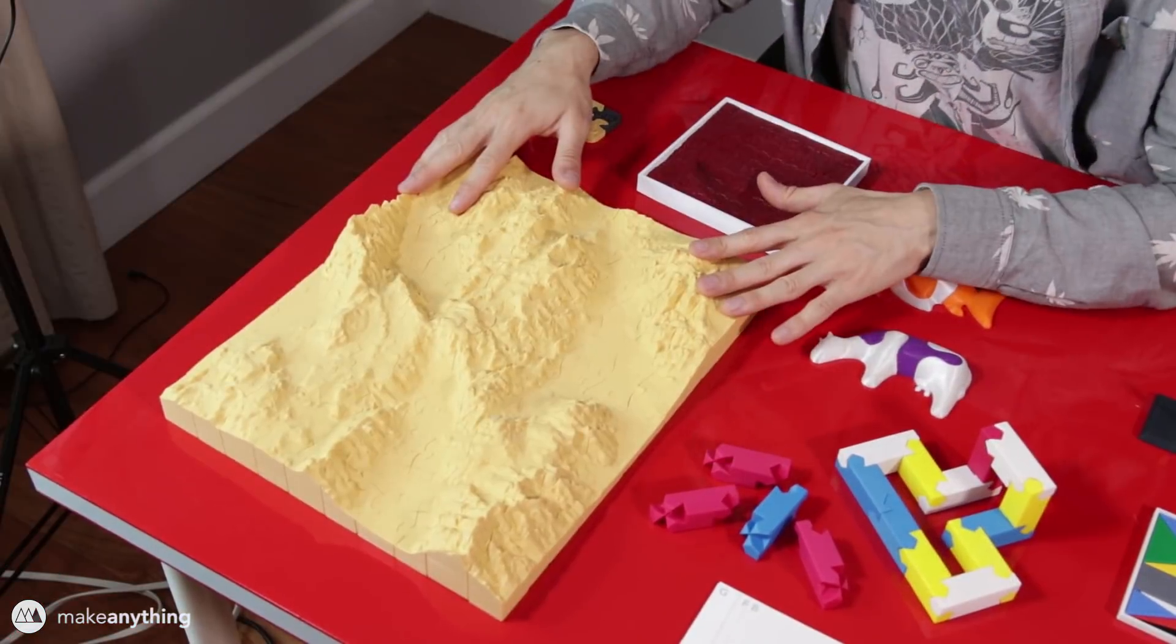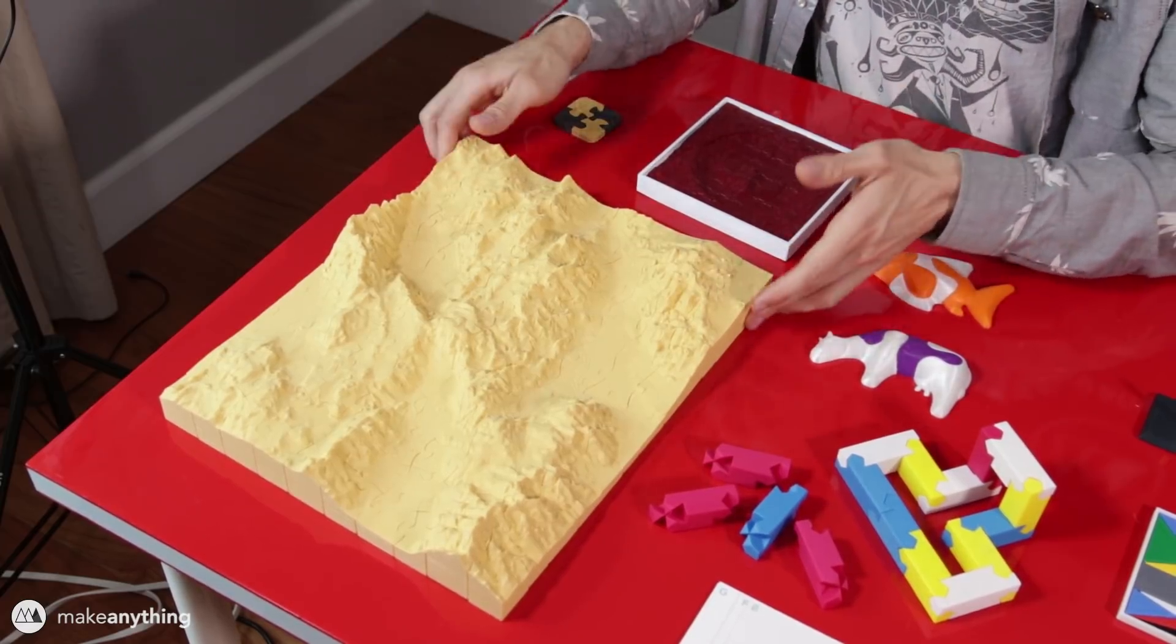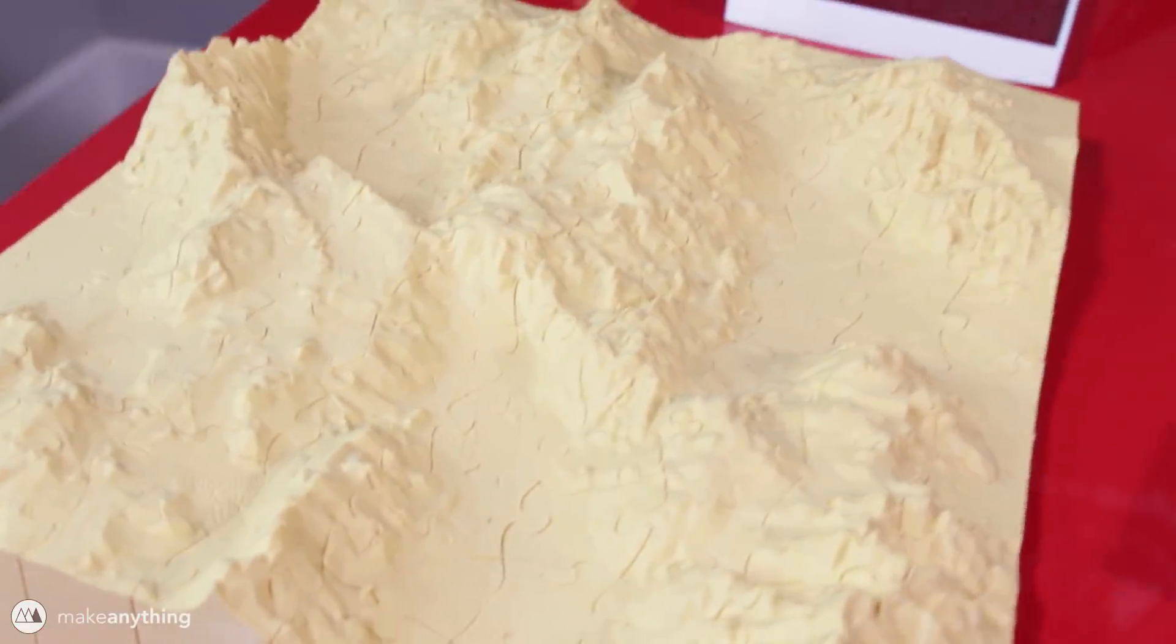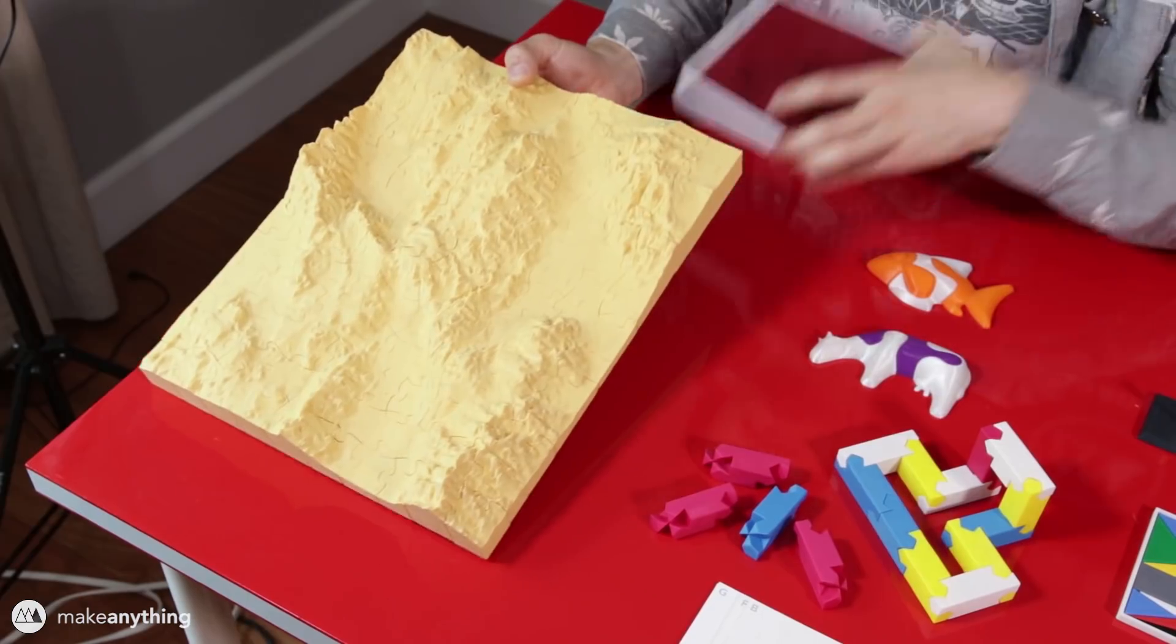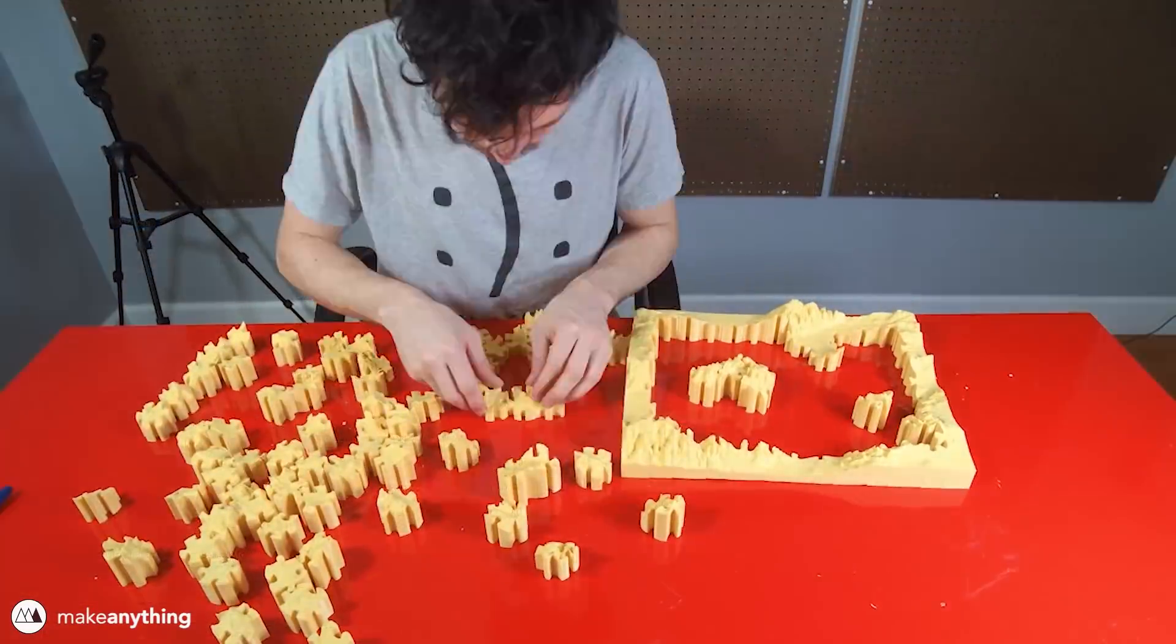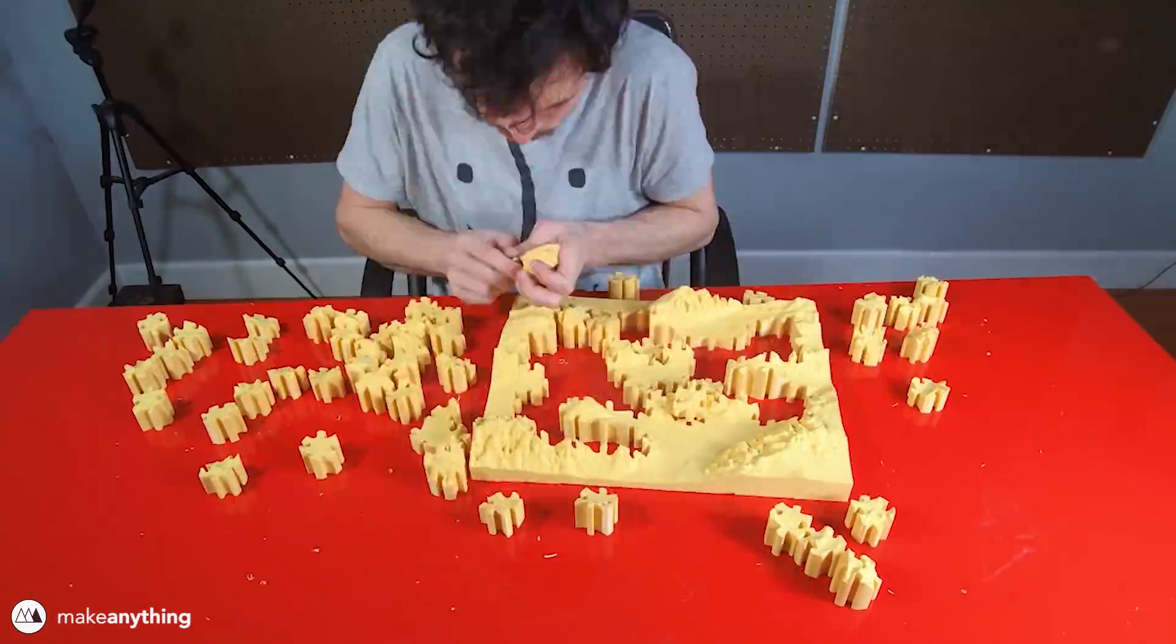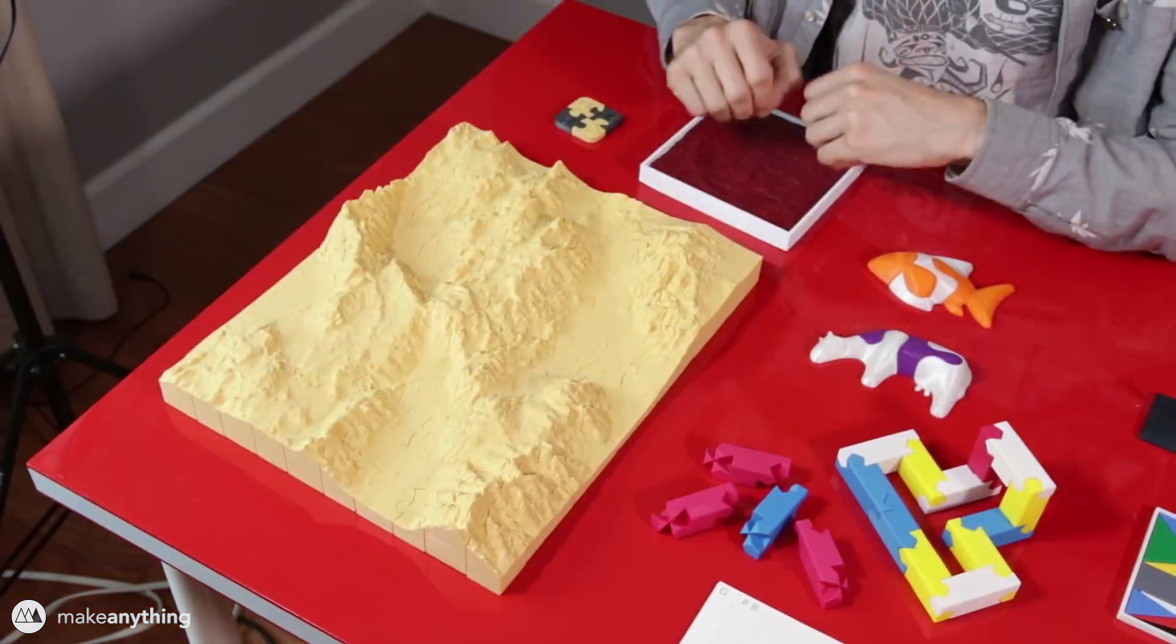Most recently, you may have seen these 3D printed jigsaw puzzles that I taught you guys how to make. These are super cool because they use actual satellite data to make a puzzle based on the geography of our planet or in this case, from the red planet of Mars. So these were really fun to make and I've got a whole video showing you all about them.